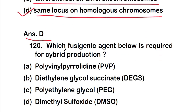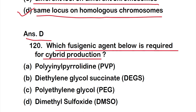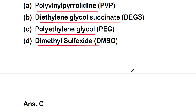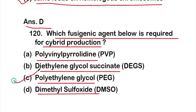Question 120: which fusigenic agent is required for cybrid production? Options: Option A polyvinylpyrrolidone (PVP), Option B diethylene glycol succinate, Option C polyethylene glycol, Option D dimethyl sulfoxide. The right answer is Option C — polyethylene glycol. These are all 20 questions of Part 6 of the Mendelian Genetics series. Thank you for watching.